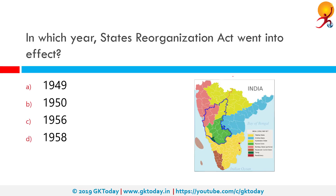In which year did the States Reorganization Act go into effect? The correct answer is again 1956. Looking at the map, the color-coded regions show which areas were Madhra state, Andhra state, and Hyderabad state — all formerly princely states that were reorganized into the states as we know them currently.